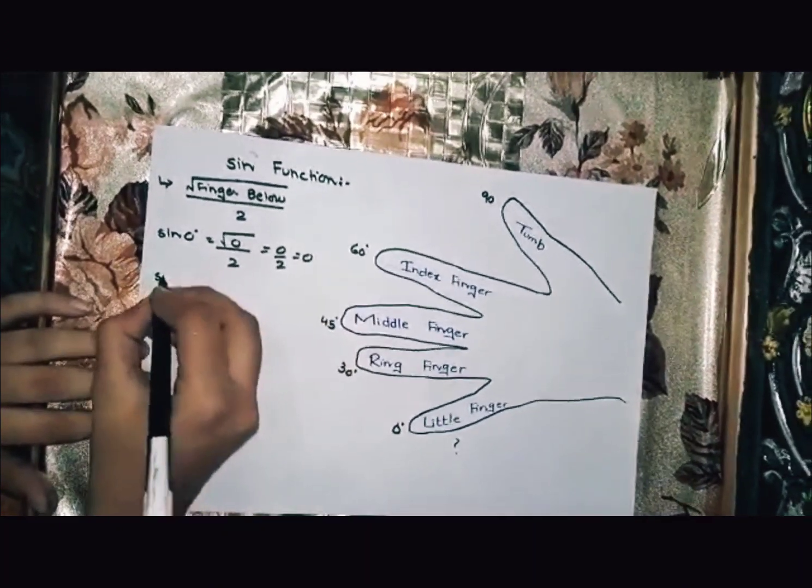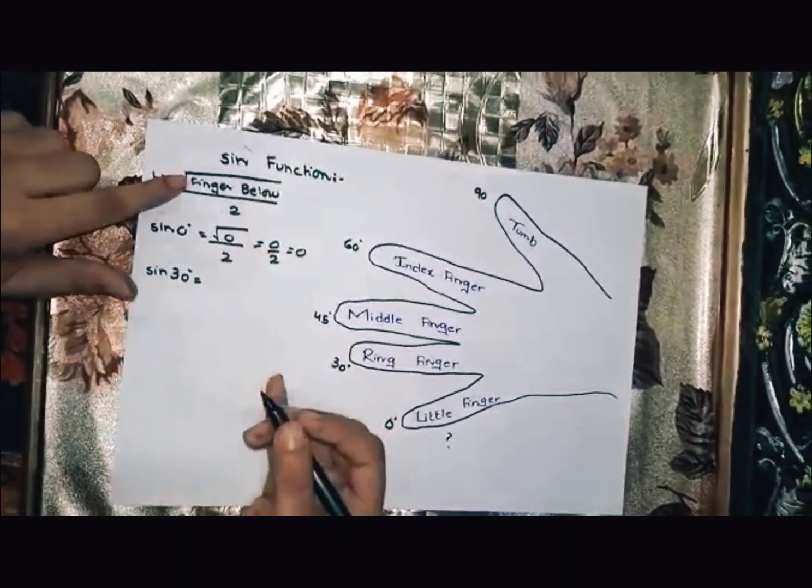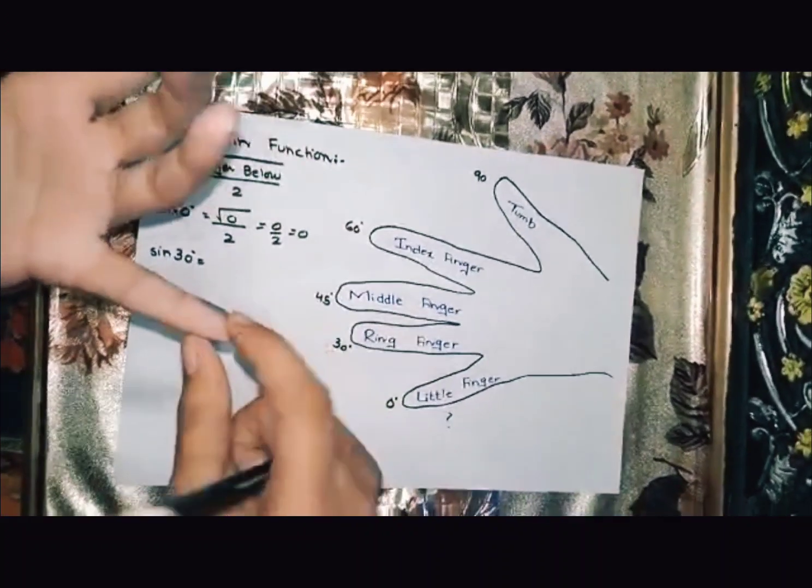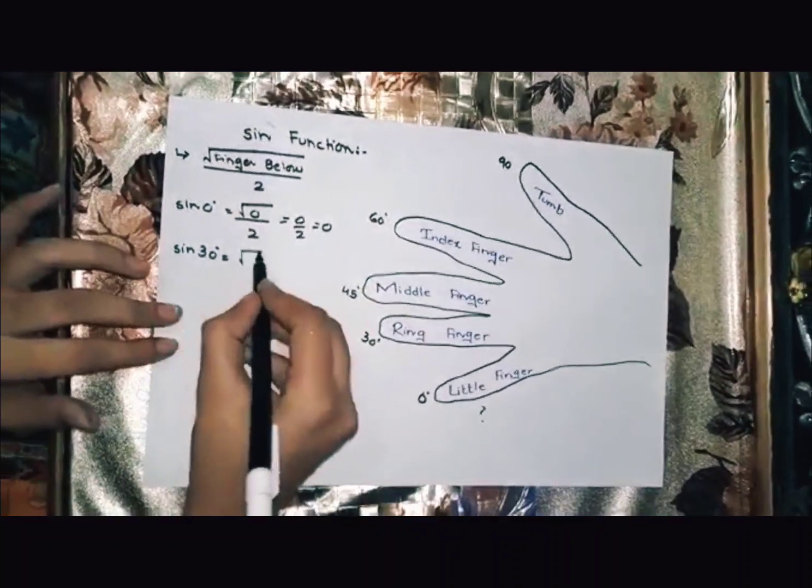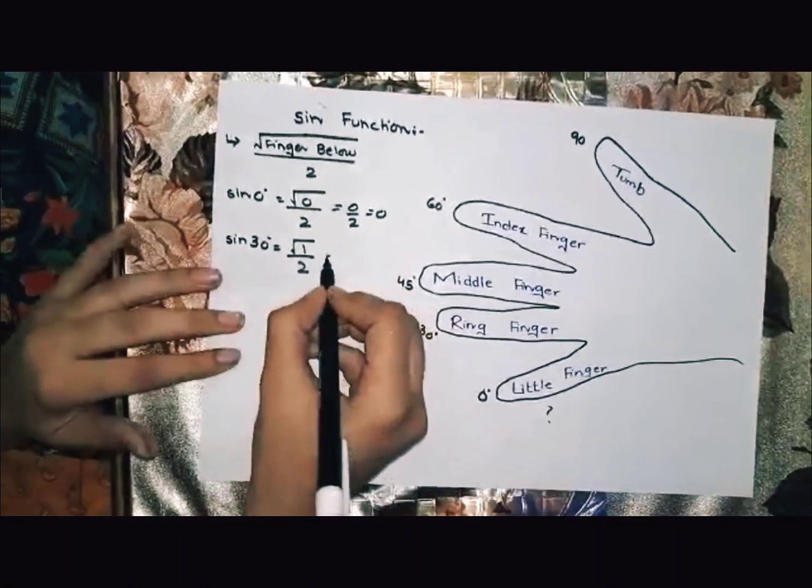Next, we find sine 30. Again, the formula is under root, finger below. For 30, we have ring finger. Under root 1 divided by 2, so the answer is 1 by 2.